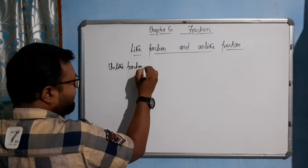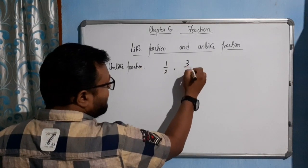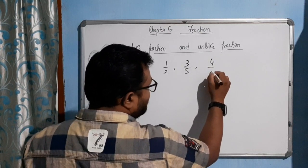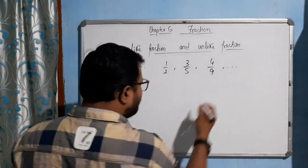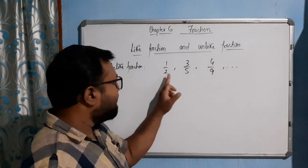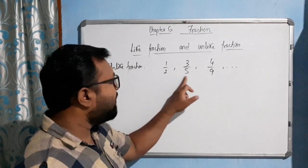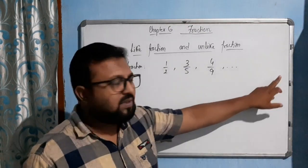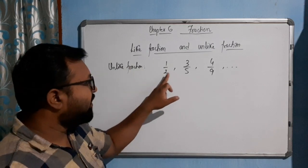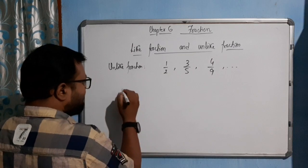Now we will talk about unlike fractions. Unlike fractions are fractions where the denominators are not the same — for example, 1/2, 3/5, 4/9. The denominators may be any different numbers. This type of fraction is called an unlike fraction.